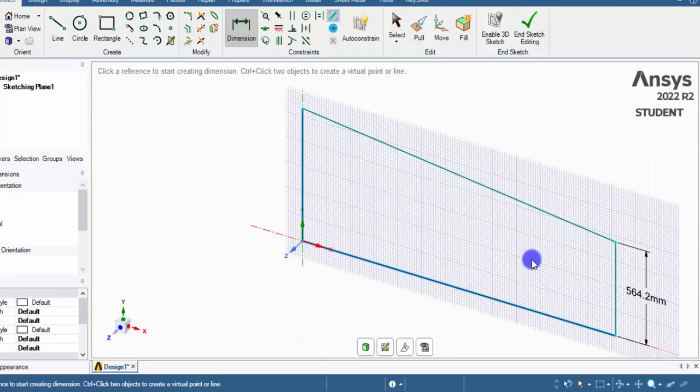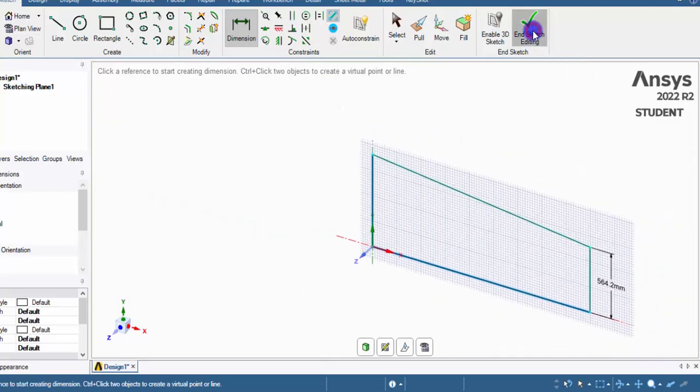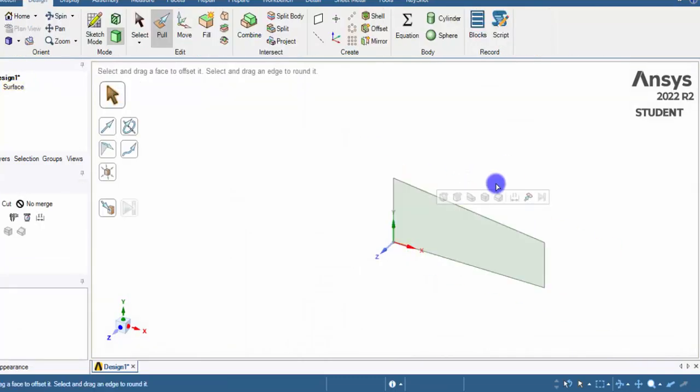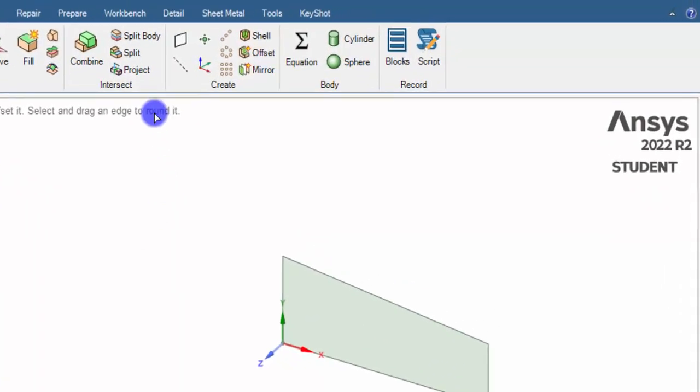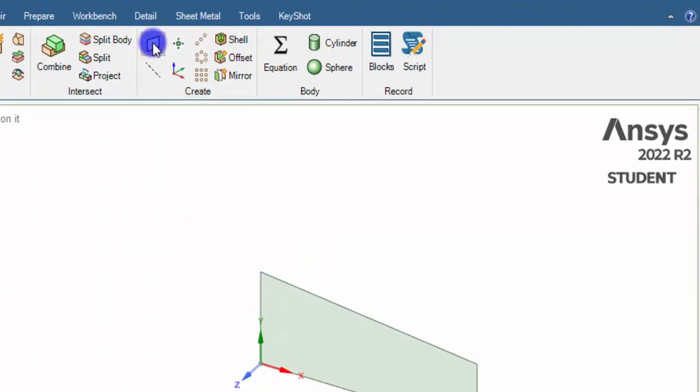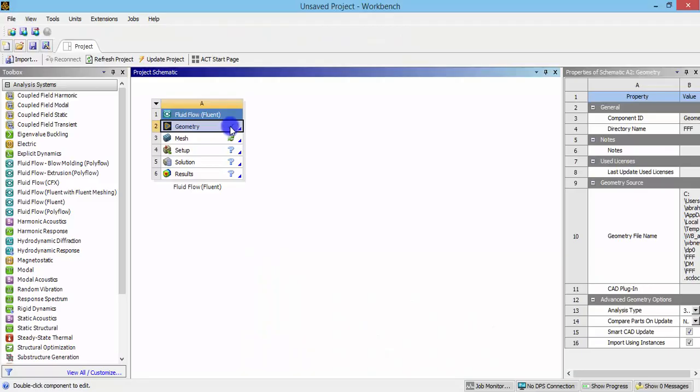After drawing this sketch, click end sketching. Now a surface has been created. We can extrude or revolve this surface to have a 3D model. Since we are interested in performing only a 2D analysis, we can create a plane. Now the plane has been created. Now we can close this Space Claim. We can see the tick mark here. That means the geometry has been created.